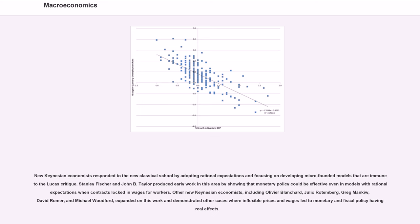New Keynesian economists responded to the new classical school by adopting rational expectations and focusing on developing micro-founded models that are immune to the Lucas critique. Stanley Fischer and John B. Taylor produced early work in this area by showing that monetary policy could be effective even in models with rational expectations when contracts locked in wages for workers.